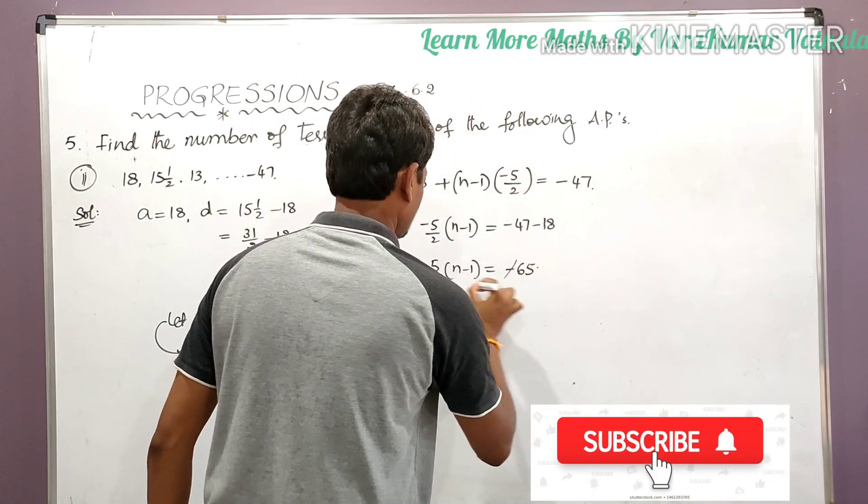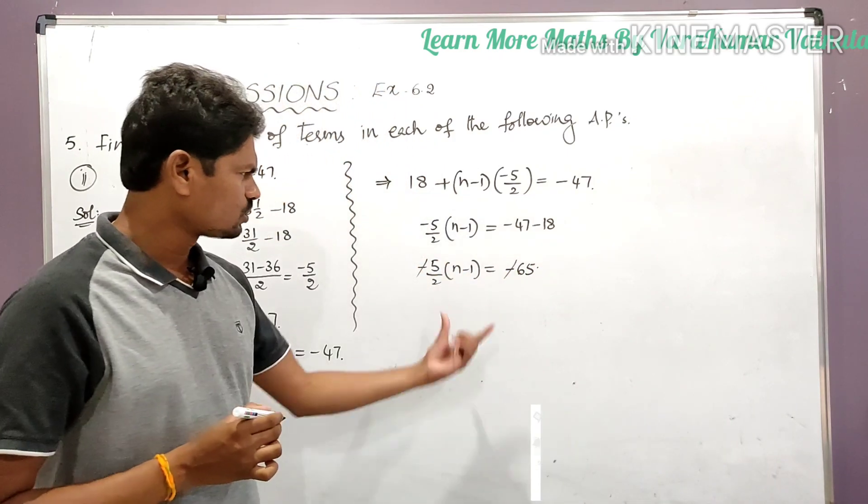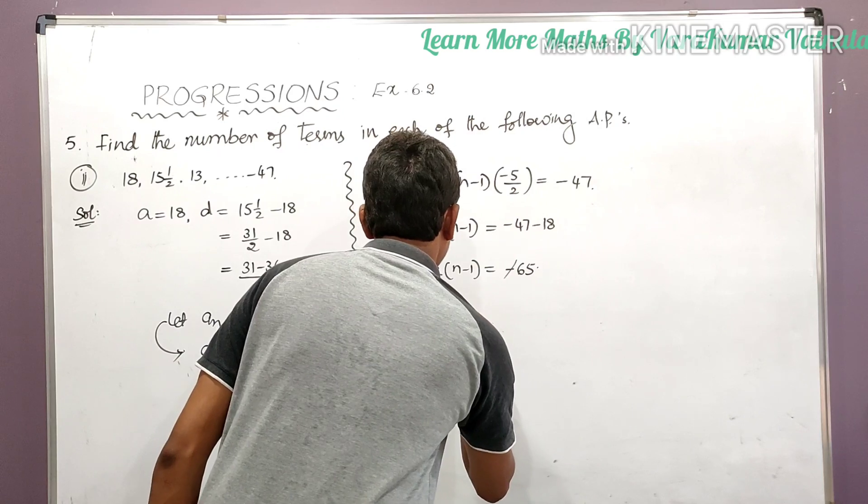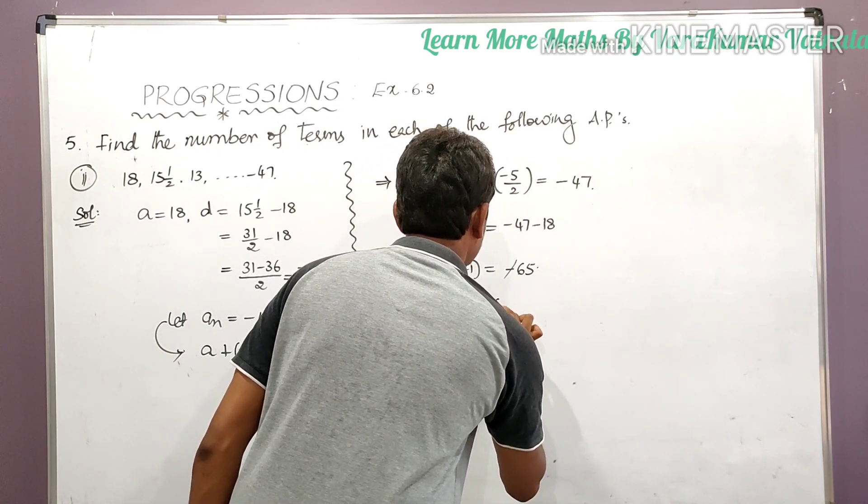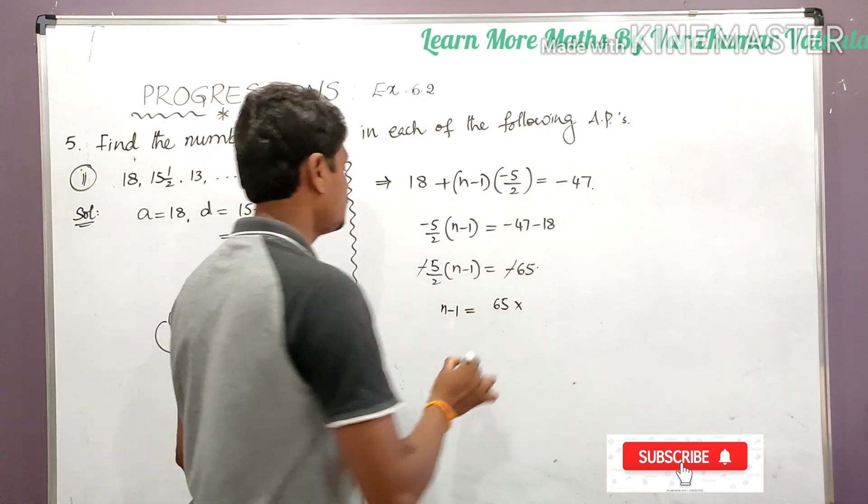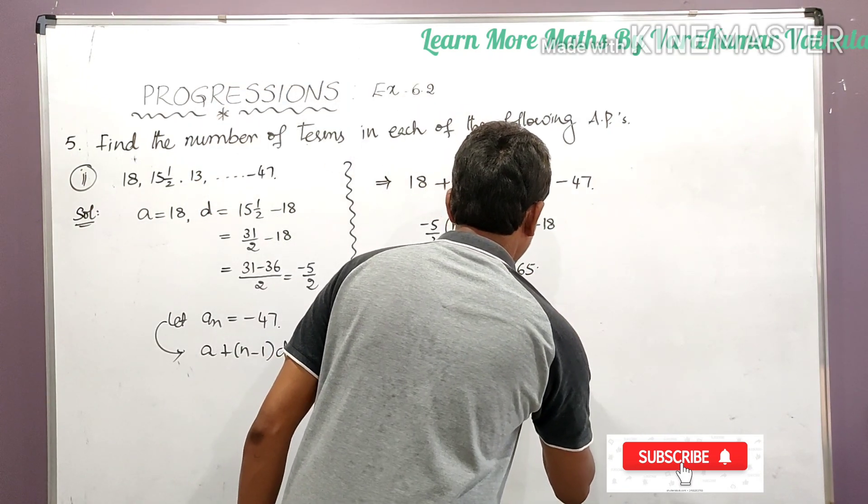So cancel negative symbol on both sides. So we can get here (n minus 1) is equal to 65 into, take 5/2 to the right side, it becomes 2/5, 2/5.